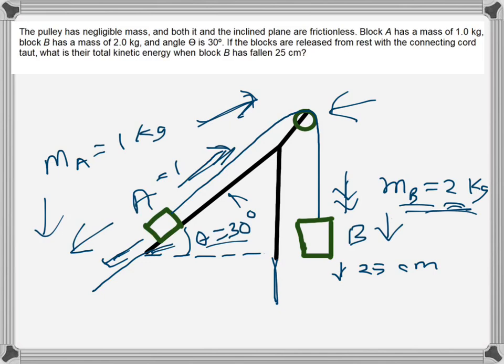This is going down, this is going up. If they are released from rest, what is the total kinetic energy when block B has fallen 25 centimeters? That means in order to find the kinetic energy, we need to find the velocity when it has gone down 25 centimeters.